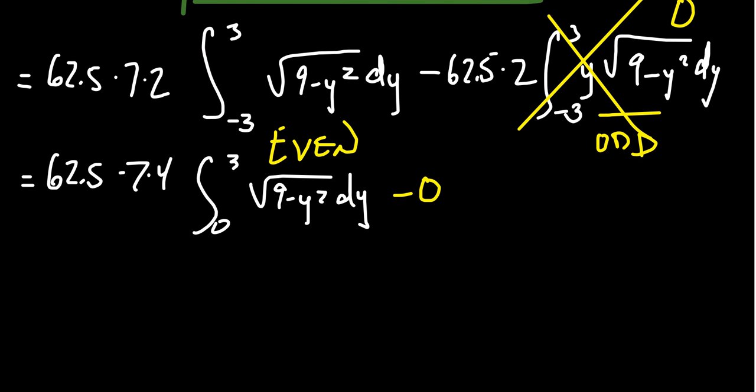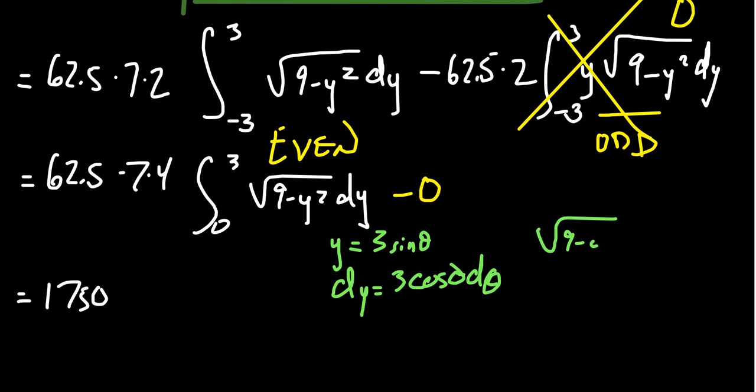Going forward, 62.5 times 7 times 4 is equal to 1750. Going forward with the integral, we could do some type of trig substitution. This is a good one to take y equals 3 sine theta. And therefore, dy equals 3 cosine theta d theta. And then the square root of 9 minus y squared would equal 3 cosine.